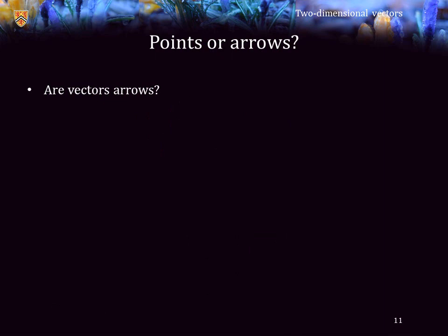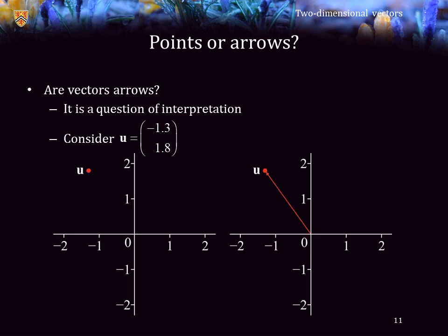This is a question of interpretation and appropriateness. Consider, for example, the following vector (-1.3, 1.8). I could interpret it as simply a point in the plane at that location, or I could interpret it as an arrow extending from the zero vector or the origin. If we are using the arrow notation, the location of the vector is also going to be called the head of the vector, while the origin will be the tail of the vector.